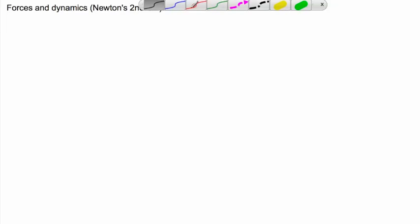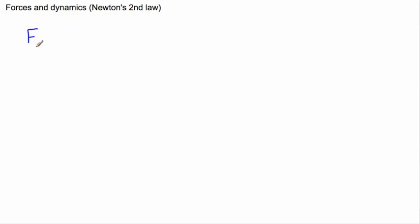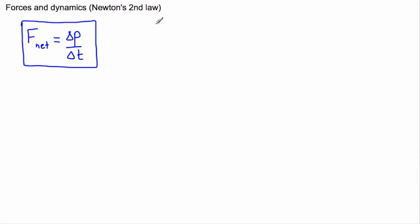Newton's second law is very useful in helping us with dynamic situations — when things are moving or when we're considering forces. I'd like to give it to you in two forms. The best one goes like this: F_net equals the change in momentum over a change in time. This right here is Newton's second law.